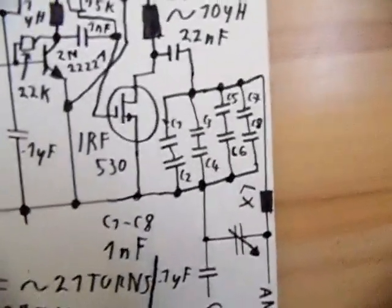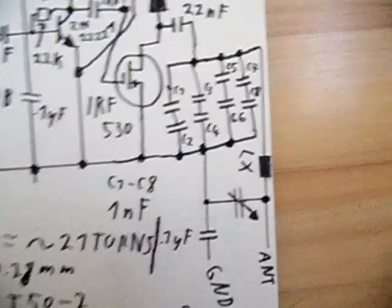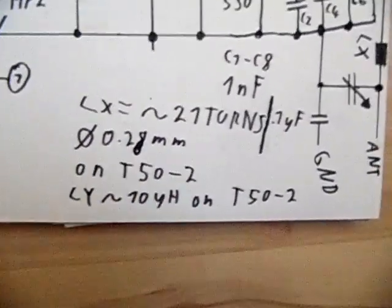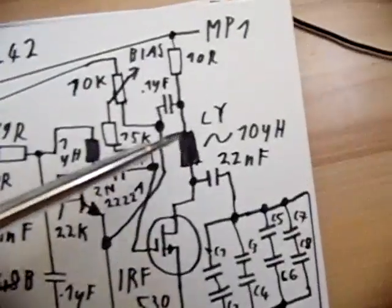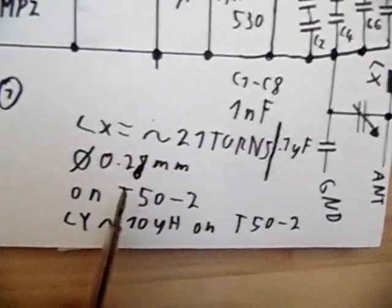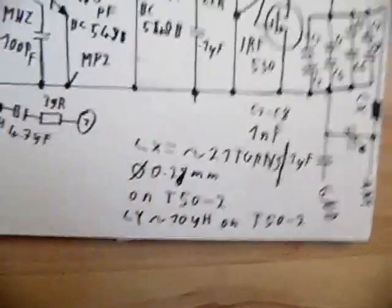They might get warm but they won't get destroyed. This coil LY and LX are wound on a T52 toroid core - transformer, of course - single toroid core for this coil and a single toroid core for this coil, not on the same toroid. And they're wound with 0.28 millimeter wire.